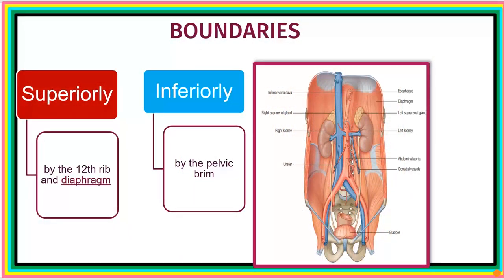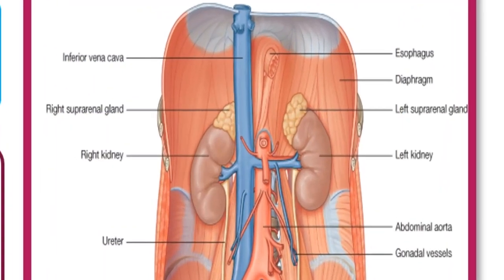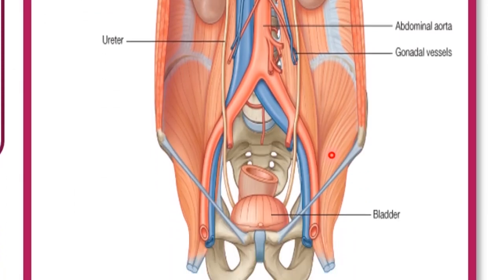Next we'll consider the superior boundary. Superiorly, we talked about the 12th rib, and at that point we'll be seeing part of the diaphragm forming the superior boundary. For the inferior boundary, we're talking about the pelvic brim — this is the region of the pelvic brim that forms the inferior boundary.